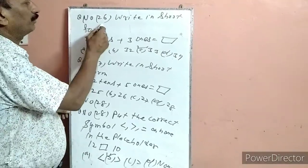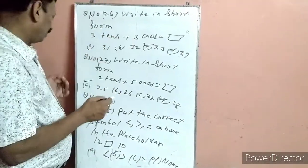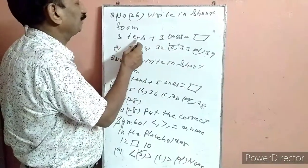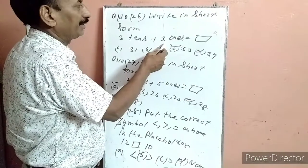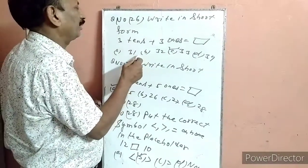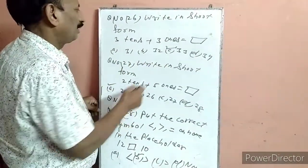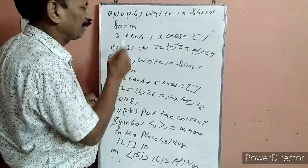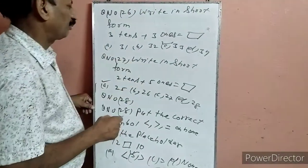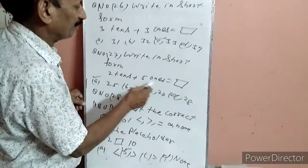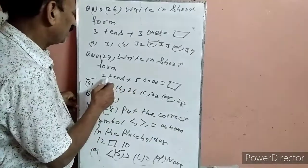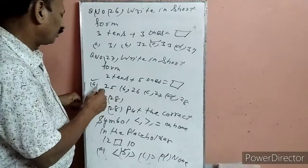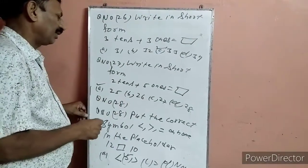Question 26: Write in short form — 3 tens, 3 ones. 3 tens means 30, plus 3 ones means 3 जोड़ देंगे: 30 में 3 जोड़ेंगे = 33. C सही है. Question 27: Write in short form — 2 tens, 5 ones. 2 tens means 20, 5 ones means 5: 25. A में है, हमने A को टिक लगा दिया.